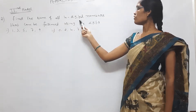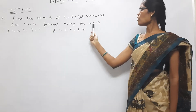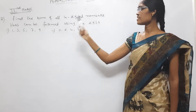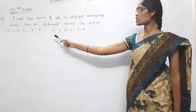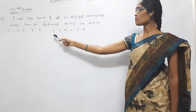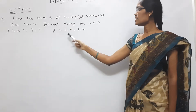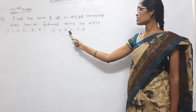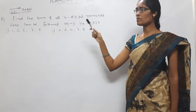Find the sum of all four-digit numbers that can be formed using the given digits. We will show you two sums. First one uses digits: 1, 3, 5, 7, 9. Second one uses digits: 0, 2, 4, 7, 8.